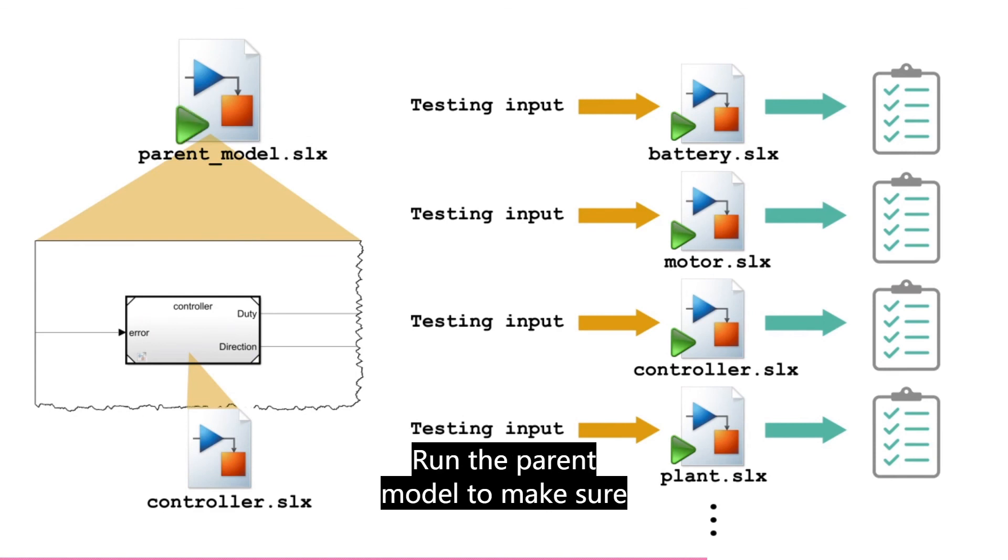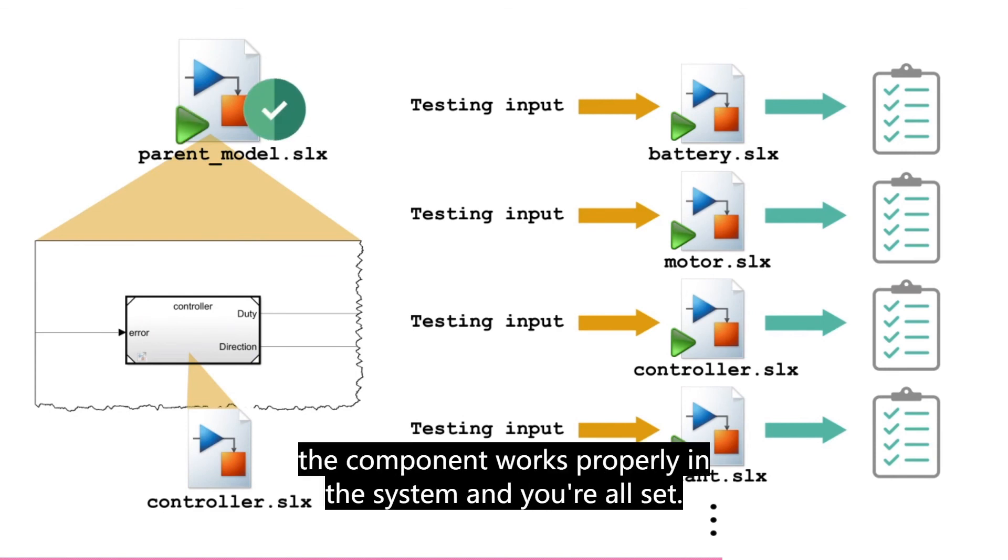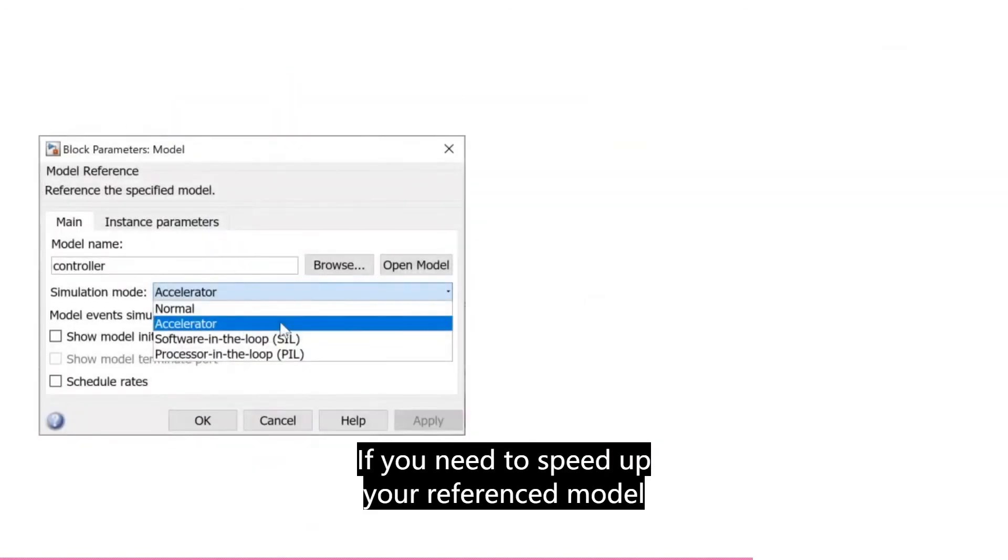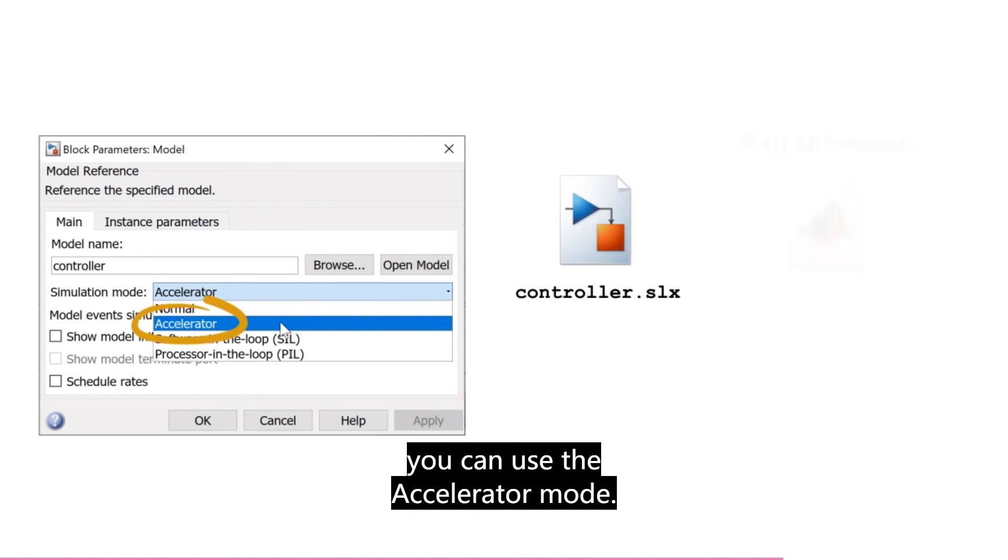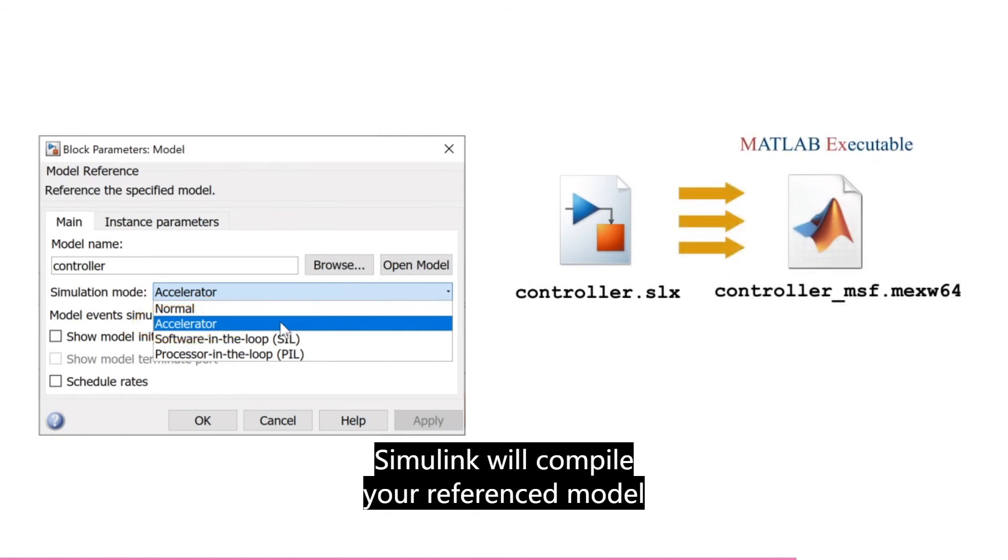Run the parent model to make sure the component works properly in the system, and you're all set. If you need to speed up your referenced model, you can use the accelerator mode. Simulink will compile your reference model into a MEX file or MATLAB executable file, so your simulation will run faster.